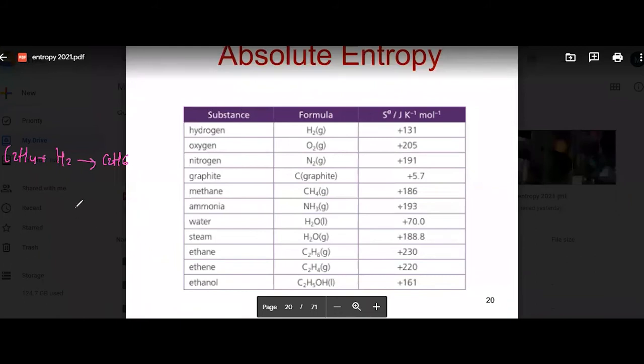Do you find where is C2H4? This right, ethylene, 220. This is ethane, 230. And hydrogen gas, 131.